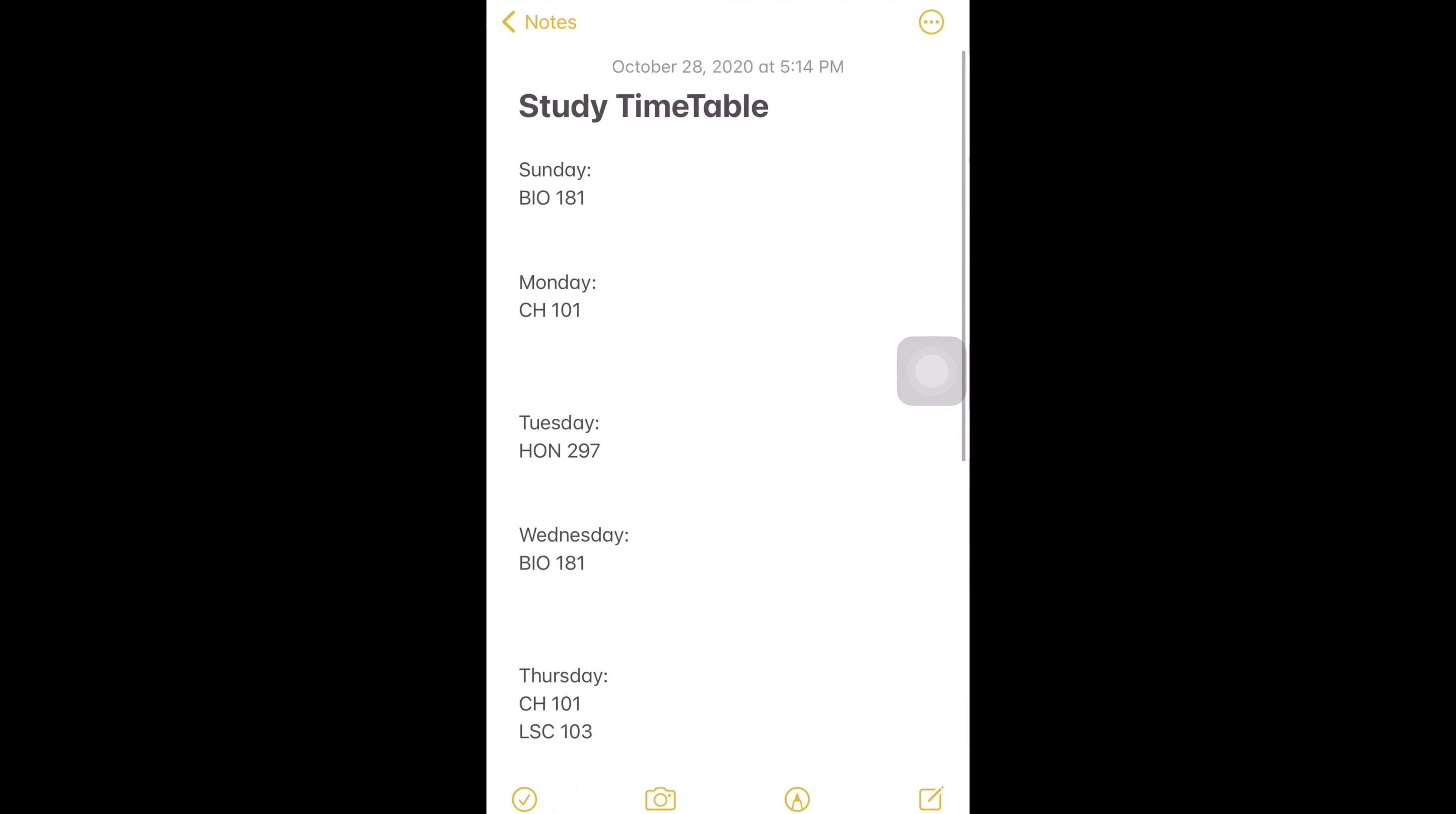Number two, use the 30-50 rule. You study for 30 minutes straight and take 5-minute breaks in between. But those breaks are not for using your phone. No, no, no.